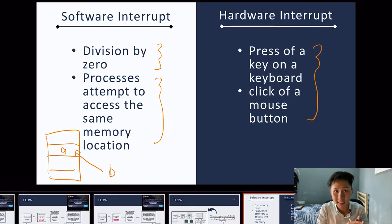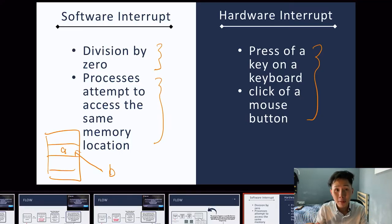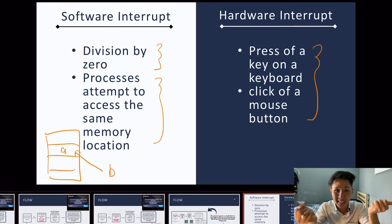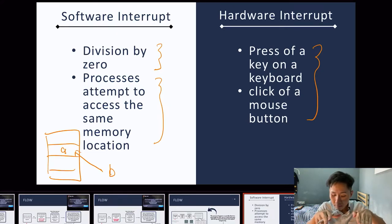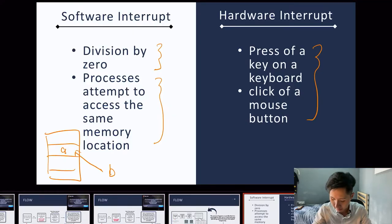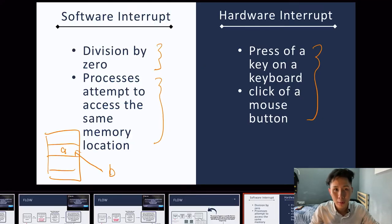To summarize: an interrupt is a signal sent by a device or program to the OS to cause a temporary stop. The reason interrupts are needed is so that computers can run multiple tasks at the same time, instead of one after the other. The two types of interrupts are the software interrupt and the hardware interrupt. In the next video, we are going to learn the different types of programming languages available.